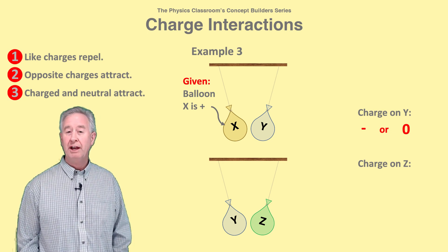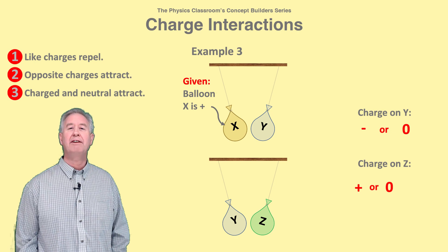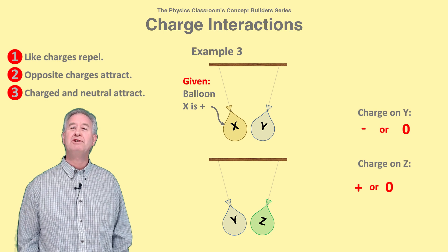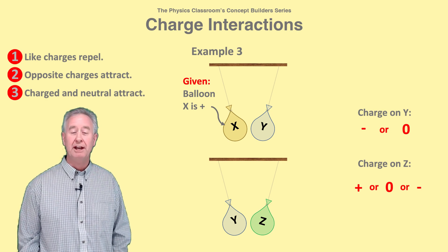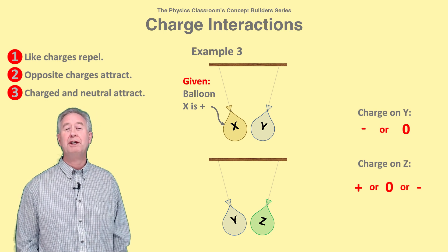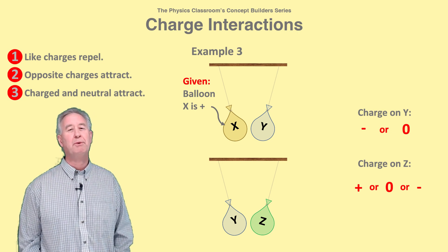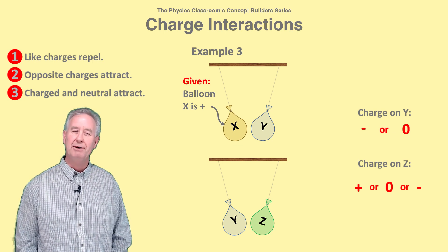If Y were negative, then Z would attract it if it were positive or neutral. But Y could also be neutral, and Z would attract it if it were negative or positive. So in conclusion, we know Y is negative or neutral, but we have very little knowledge about Z.